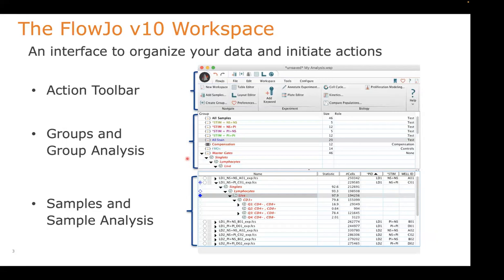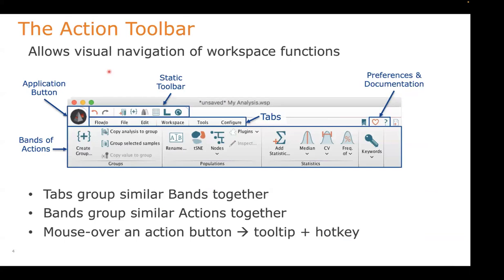Down below is the sample pane where we see our individual FCS files. At the top of the workspace is the action toolbar — this is where we'll do most of our navigation. We have tabs across the top, and going through the different tabs you'll see different ribbons appear. Within the ribbons are different bands — like groups, population, statistics — and the different bands group together similar actions or buttons.